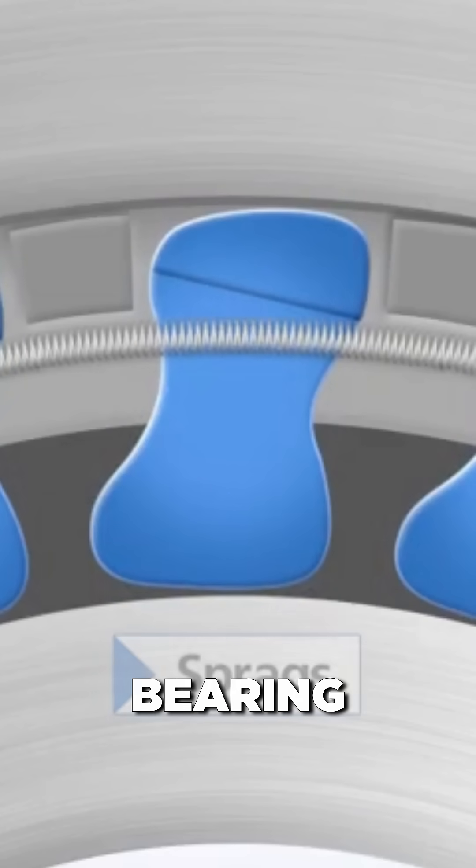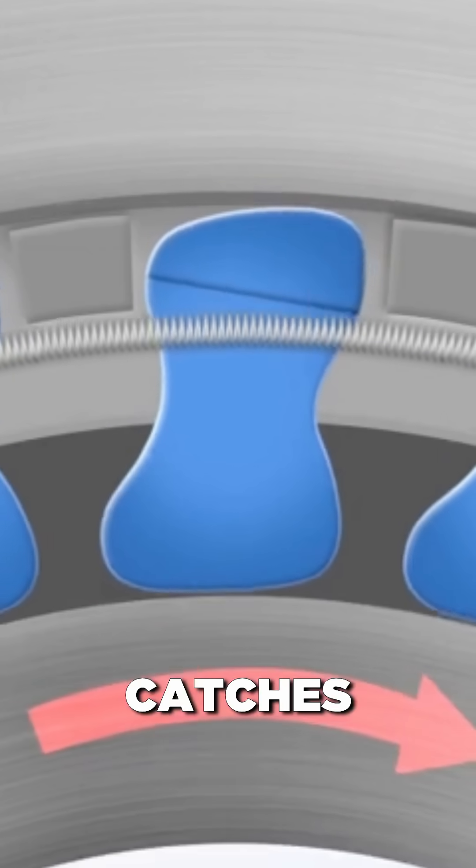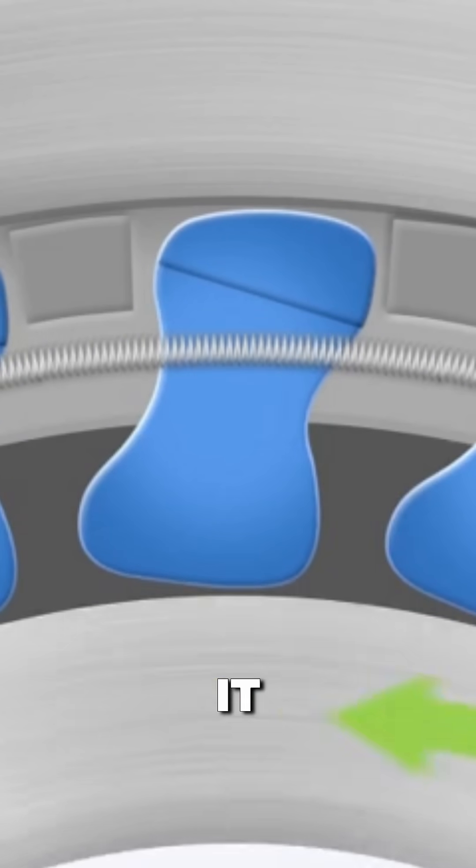Between every little ball bearing, there's a Sprague clutch that catches the inner wall when I try to rotate it the wrong direction.